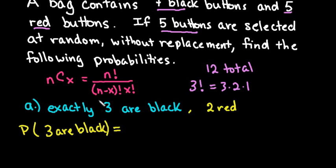We're going to set it up as a combination, where n is the total number that you have. So we have a total of 7 black buttons, and we want to get 3 of them on our selection. We are picking a total of 5 buttons, so if 3 of them are black, 2 of them are red. We have 5 red buttons that we are going to take 2 at a time. And then we have a total of 12 buttons taken 5 at a time.